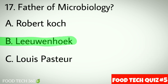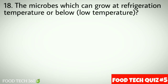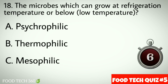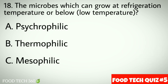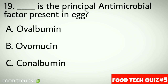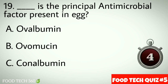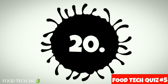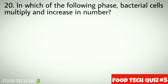Question number seventeen: father of microbiology. Options: a) Robert Koch, b) Leeuwenhoek, c) Louis Pasteur. Correct answer: b) Leeuwenhoek. Question number eighteen: the microbes which can grow at refrigeration temperature or below. Options: a) psychrophilic, b) thermophilic, c) mesophilic. Correct answer: a) psychrophilic. Question number nineteen: dash is the principal antimicrobial factor present in egg. Options: a) ovalbumin, b) ovomucin, c) conalbumin. Correct answer: c) conalbumin.